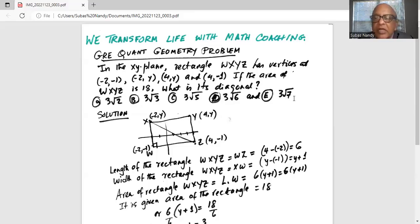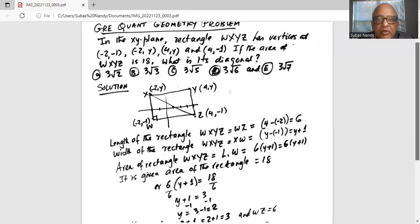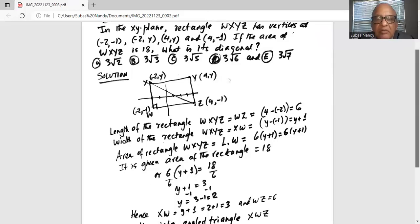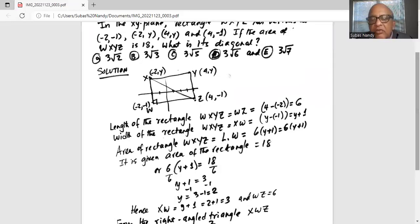Now it is given the area of the rectangle is equal to 18. So 6 times (y + 1) equals 18. Divide by 6 on both sides, so y + 1 equals 3. Subtract 1 on both sides, so we get y equals 3 minus 1, which equals 2.